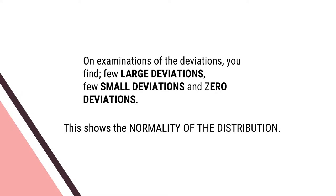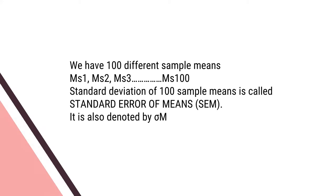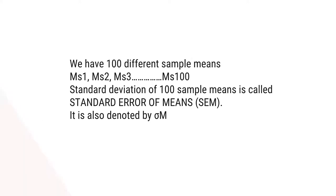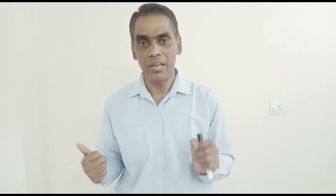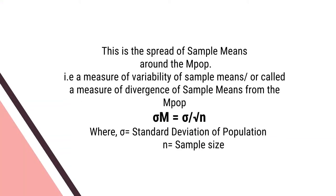This shows that the distribution of sample mean is normally distributed. We have 100 different sample means, Ms1 to Ms100. The standard deviation of those 100 sample means is called the standard error of mean — a concept already discussed in week 1. The standard error of mean is denoted by the symbol Sigma M. This is the spread of sample means around the population mean; Sigma M is a measure of variability, or divergence, of sample mean from the population mean. Sigma M equals Sigma divided by the square root of N, where Sigma is the standard deviation of the population and N is the sample size.